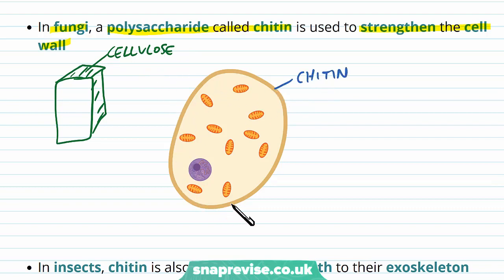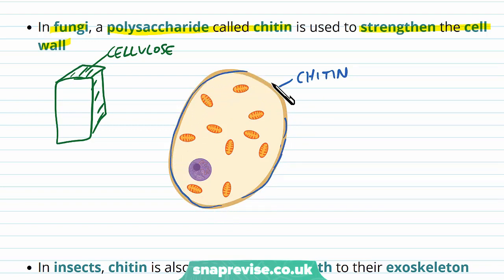Chitin has majorly the same function as cellulose in terms of giving rigidity and strength to the cell wall which surrounds the cell, but it's made of a completely different molecule.